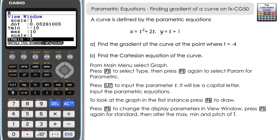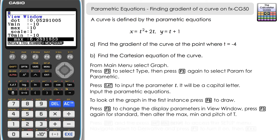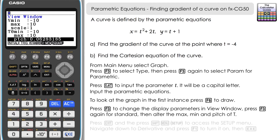Scroll down to t or theta minimum. We want some negative values for t, so change the minimum to negative 10 to give a good range, and change the maximum to 10. Pitch means the increment by which t increases — set that to 0.1 and press execute.